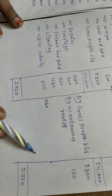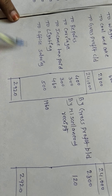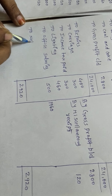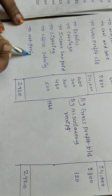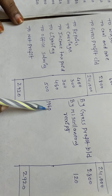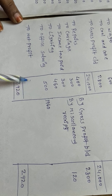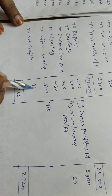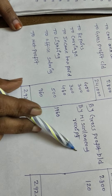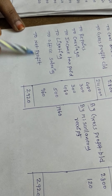Credit side means income is more than expenditure. The balance is called net profit. We deduct 1,960 from 2,920 — the balance amount is 960 rupees net profit. Incomes are more than expenditure, so net profit is 960.